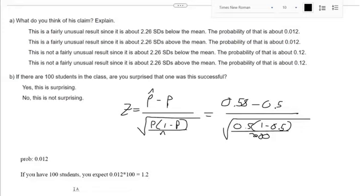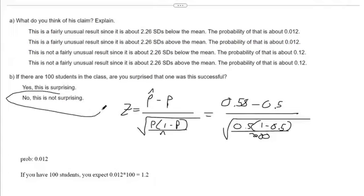Because an expected value is a probability times an amount. You've got a probability of having this result of 0.012, and you've got 100 different students. So you expect a little more than one student. So that means you expect one student, maybe two students to have this result. So it's not surprising in this case.